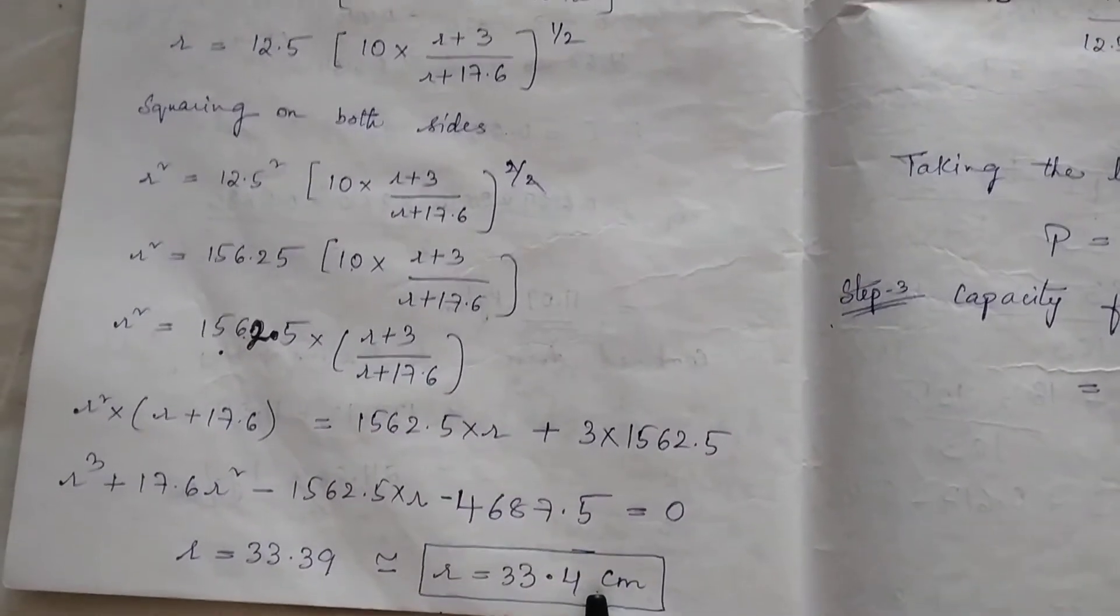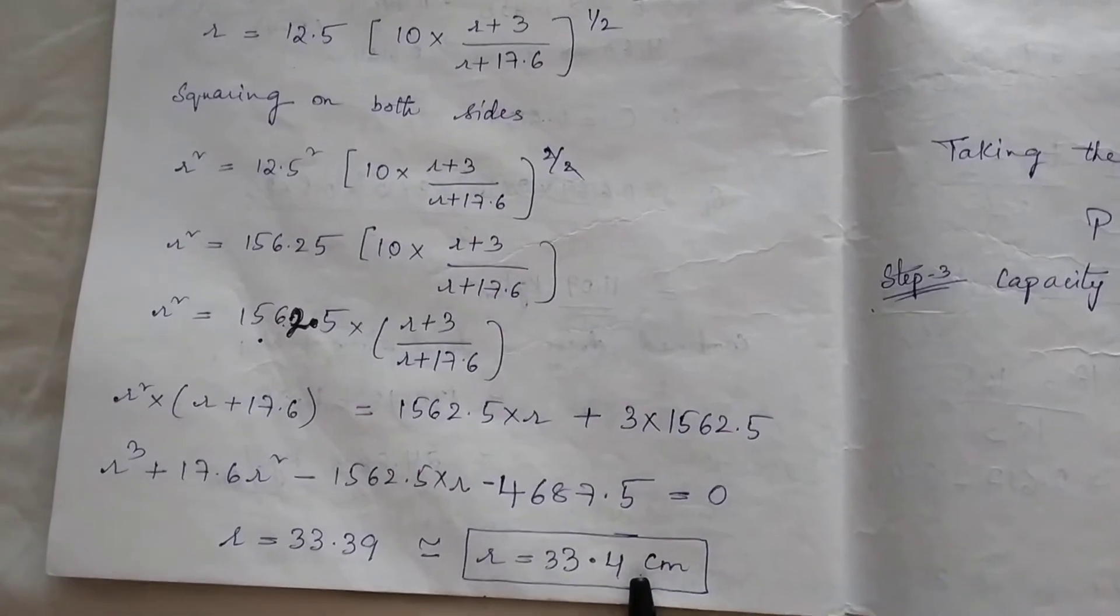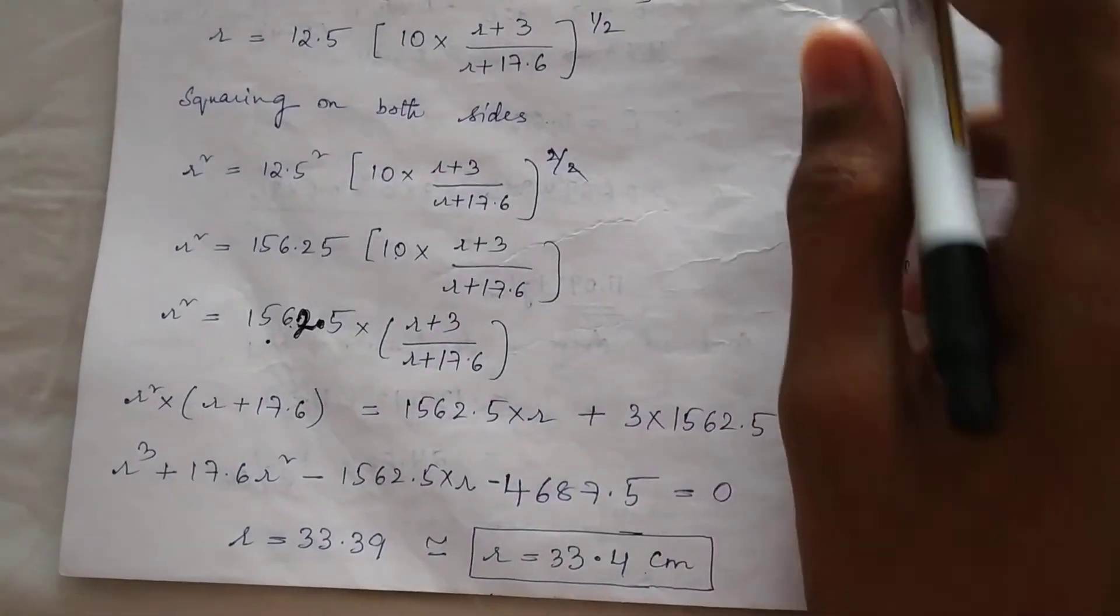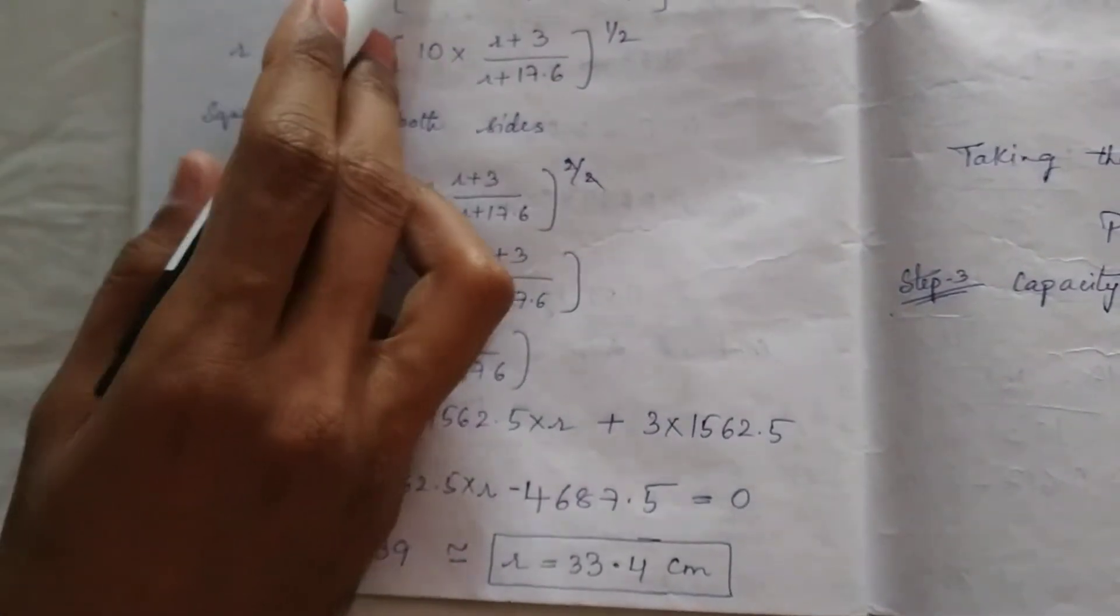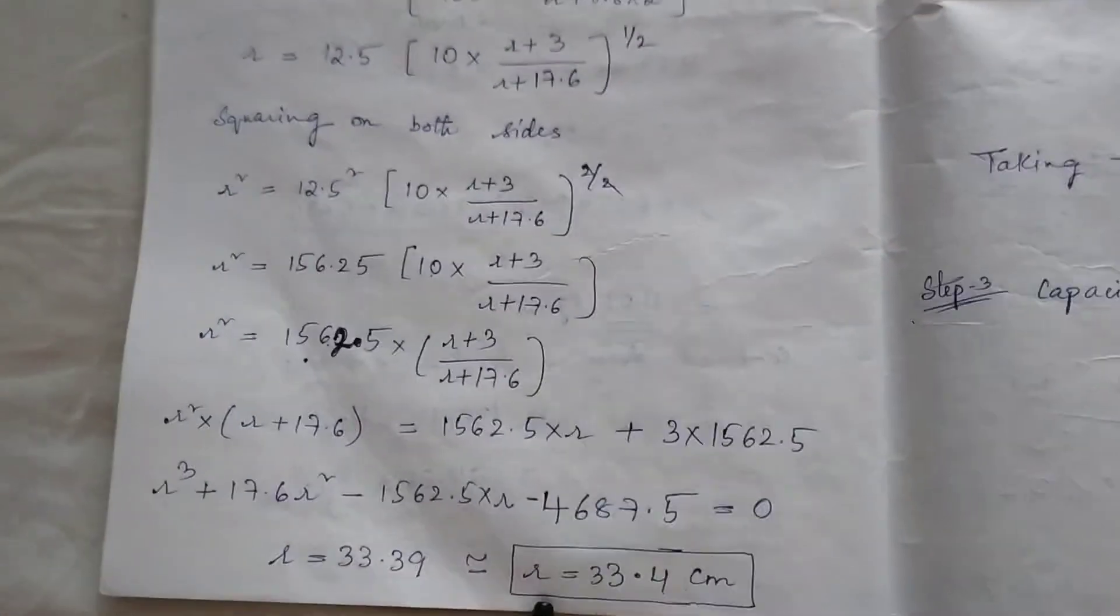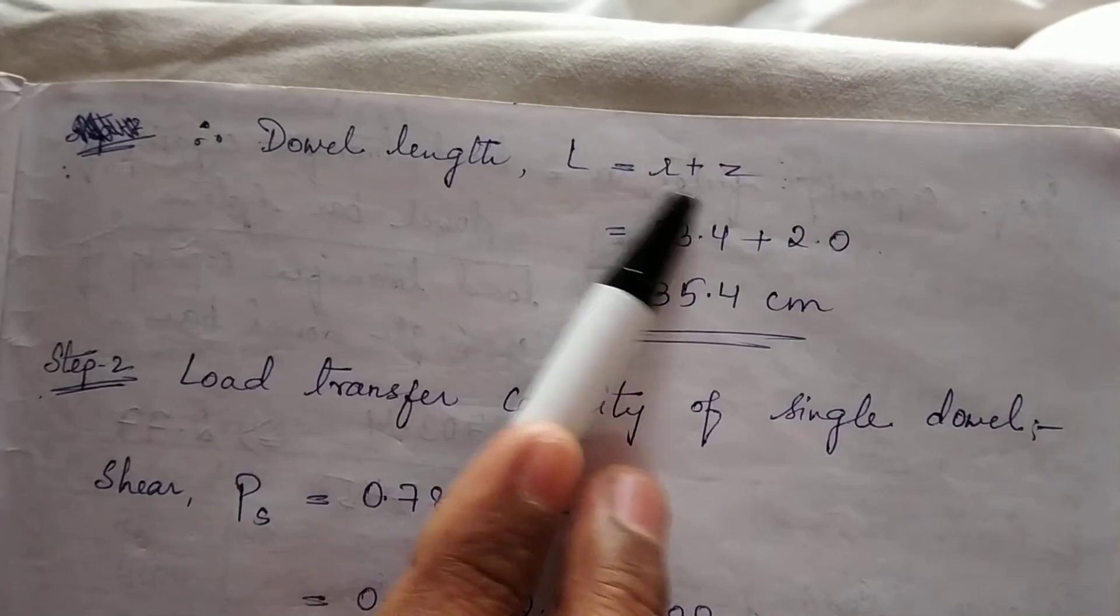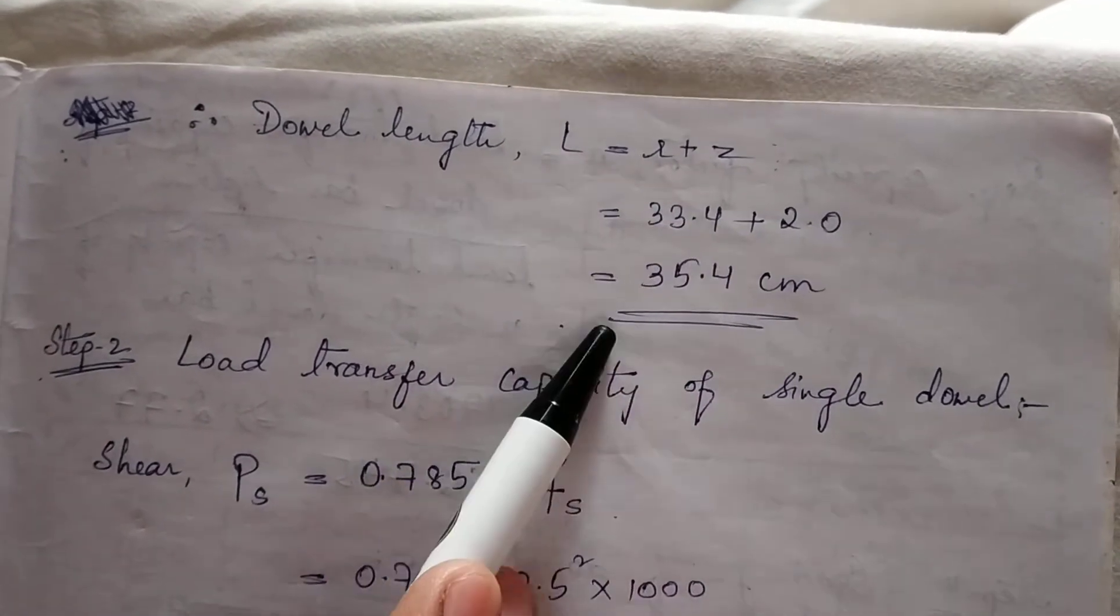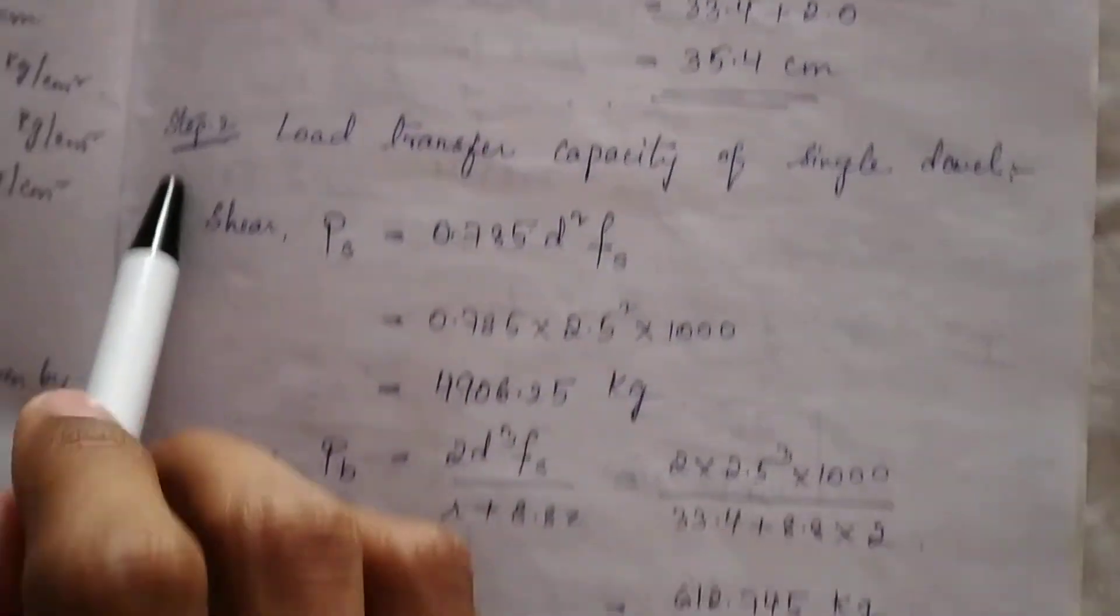We will calculate dowel length capital L. This r is the length of dowel embedded in concrete. From that, we can calculate dowel length L = r + Z. We have the values, we will get length in centimeters.